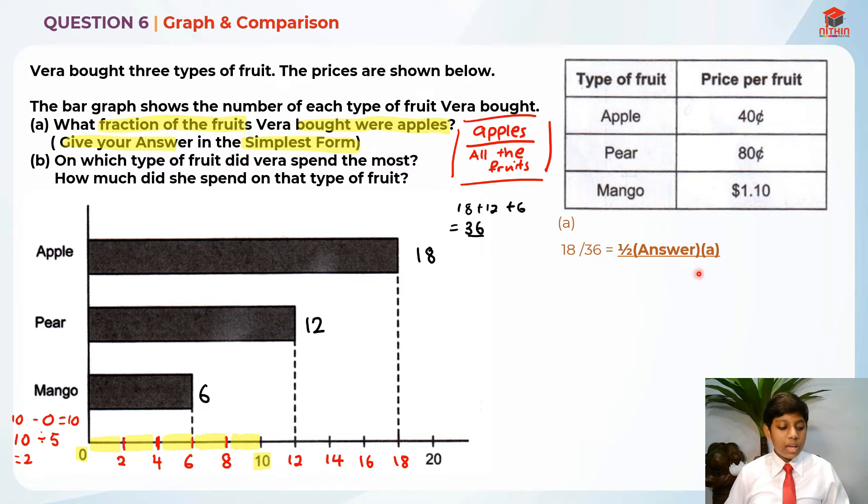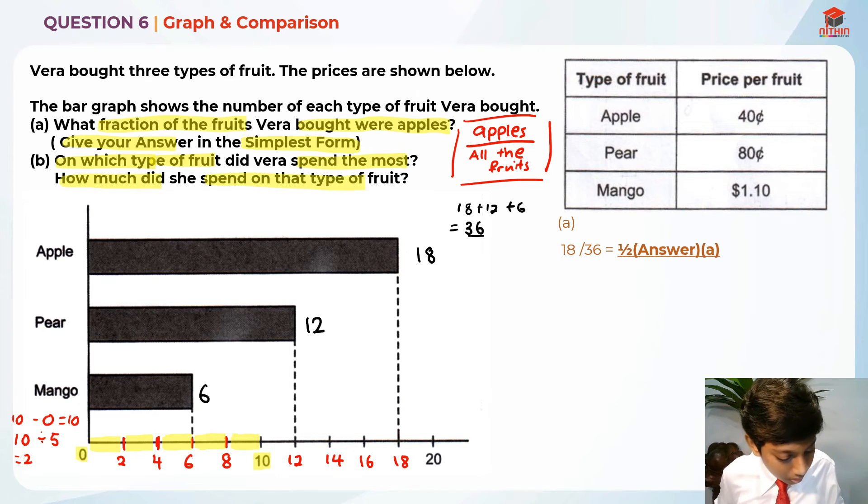I hope you understand my explanation for part A. Now, let's move on to part B. Let's read the question. On which type of fruit did Vera spend the most? How much did Vera spend on that type of fruit? Let's highlight the key information. They're asking us which type of fruit did Vera spend the most amount of money, and how much did she spend on that type of fruit.